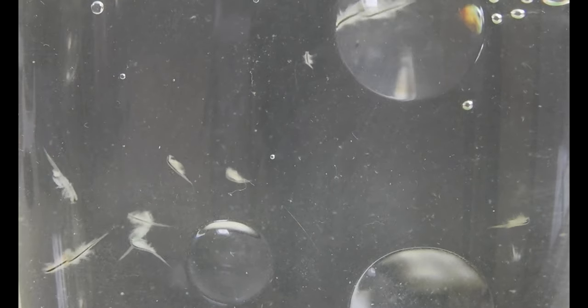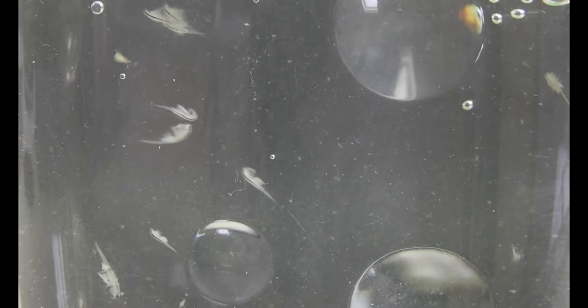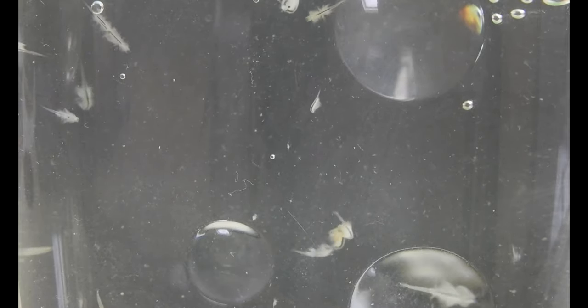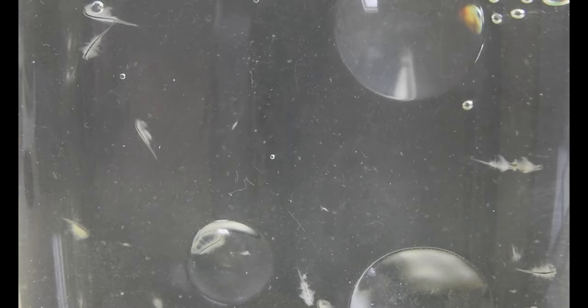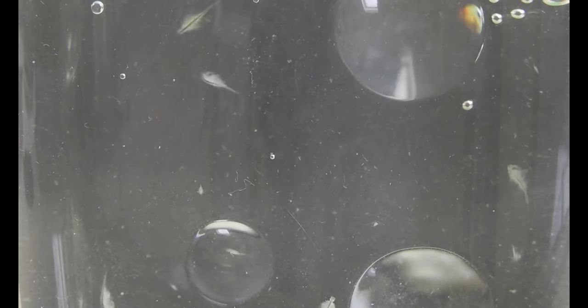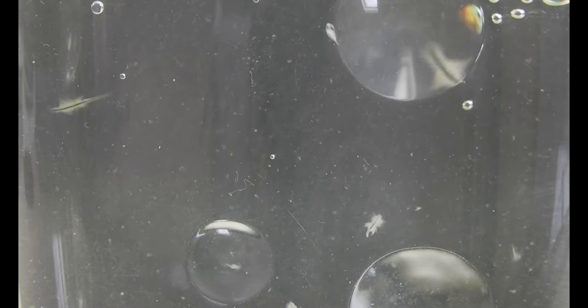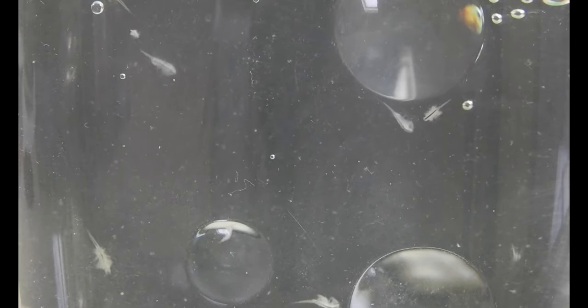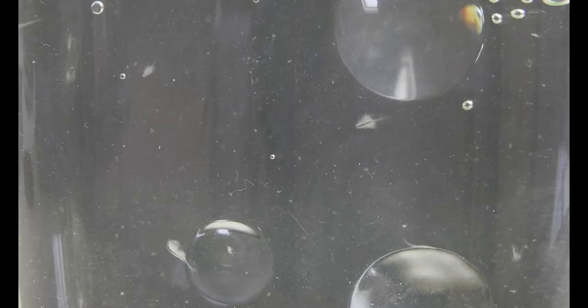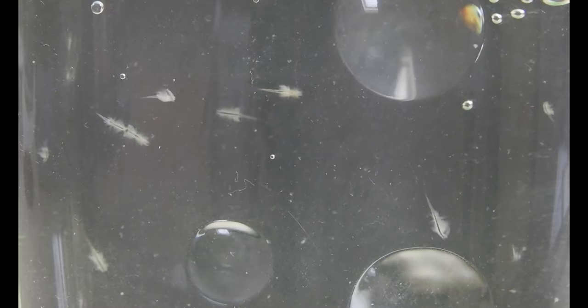You see, it is not at all a trivial thing to keep a captive bred population of brine shrimp going for that long, let alone while regularly harvesting eggs for sale from them. While maintaining a stock is difficult enough, one would also have to induce the animals to produce the right type of durable egg. When conditions are nice, they just give live birth by having soft-shelled eggs hatch immediately. Those are useless for the production of instant-life kits.